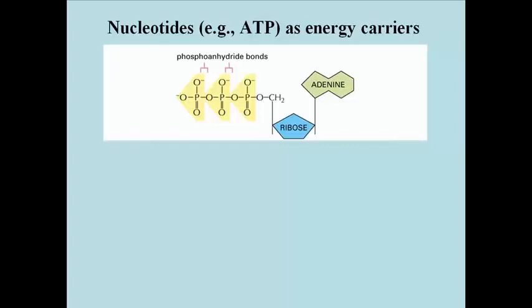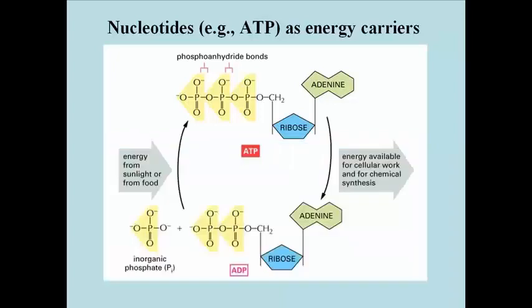But recall that free energy from sunlight, or more directly from food, is used to make ATP. The energy in ATP, in particular in the phosphoanhydride bonds shown here, is then used to do cellular work.